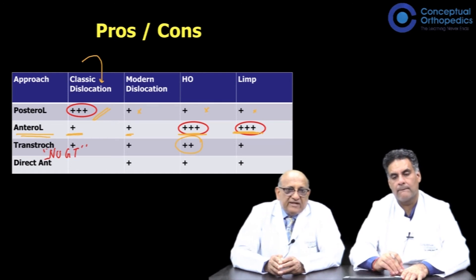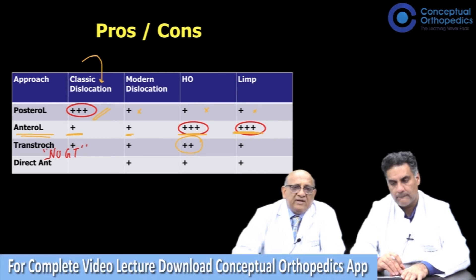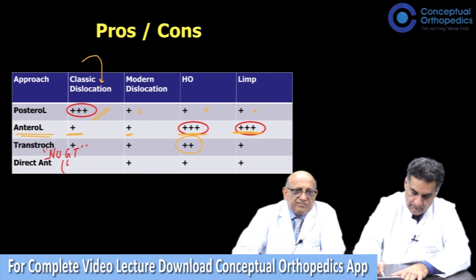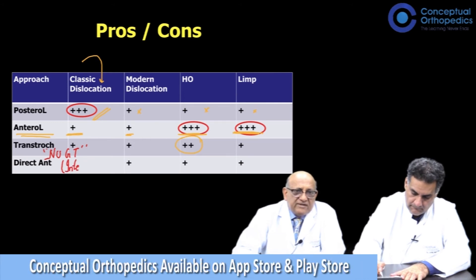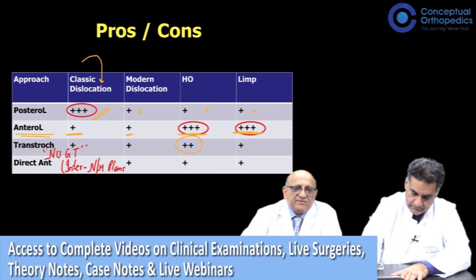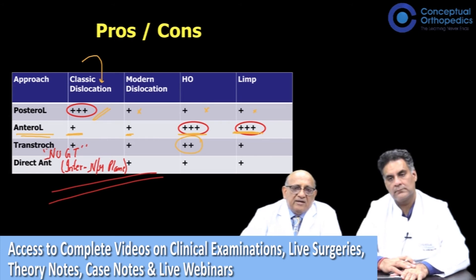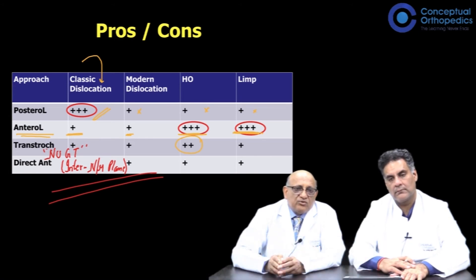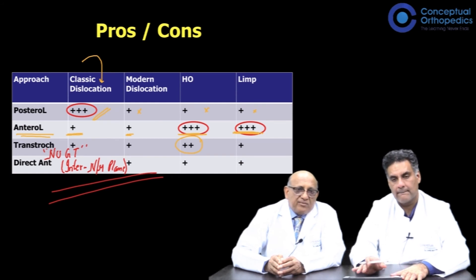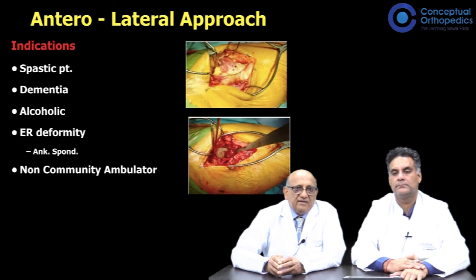The direct anterior approach is gaining popularity. It works in the intermuscular and internervous planes and therefore produces the least problems in terms of dislocation and the least time in recovery. Many surgeons are moving to the direct anterior approach, but for all practical purposes the posterior or posterolateral approach remains the most commonly preferred approach by most hip surgeons across the world.